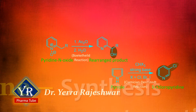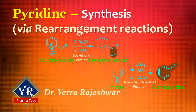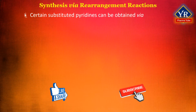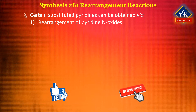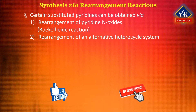In this video, we shall learn the synthesis of pyridine via rearrangement reactions. Certain substituted pyridines can be obtained via rearrangement of pyridine N-oxides — a reaction known as the Boekelheide reaction — or via rearrangement of an alternative heterocycle system, which is called the Ciamician-Dennstedt reaction.